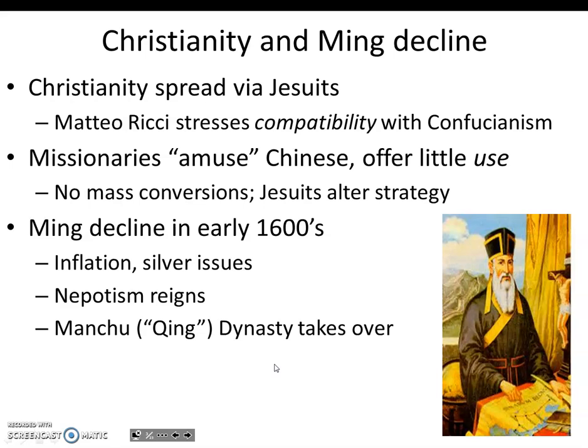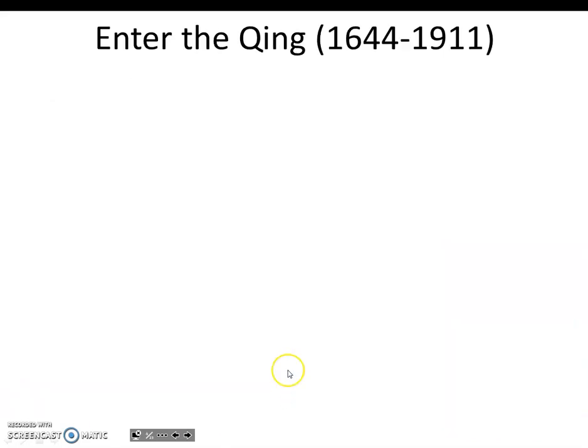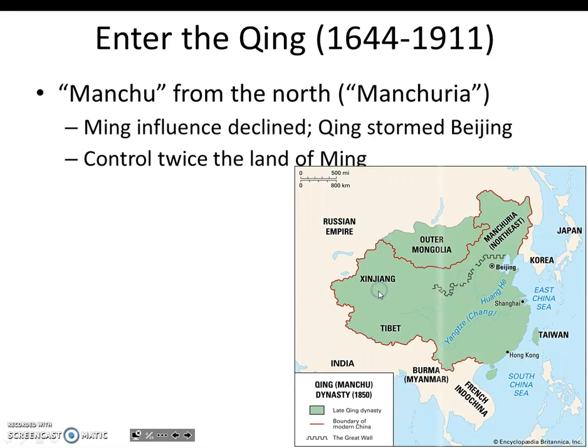Internal rebellions became a consistent occurrence, and northern invaders from what's now Manchuria — the Manchu — overthrew the dynasty in 1644 and began the Qing Dynasty. The Manchu, or Qing Dynasty, would definitely increase the empire. This is actually the last Chinese dynasty in Chinese history.